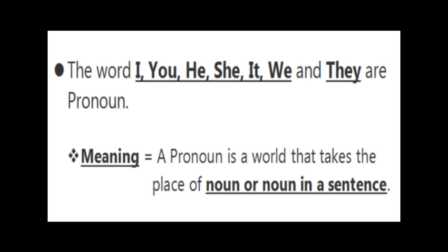Sabhi ne padha hai, noun kya hota hai — noun is the name of a person, thing, animal or place. Kisi person ka naam, thing ka naam, animal ka naam, ya place ka naam. Ye sab jo noun hote hai, instead of this noun we can write the pronoun. Hame log pronoun ka use kar sakte hai. Pronoun aisa word hai jo noun ki jagah use hota hai.